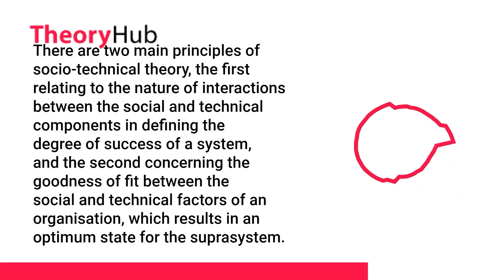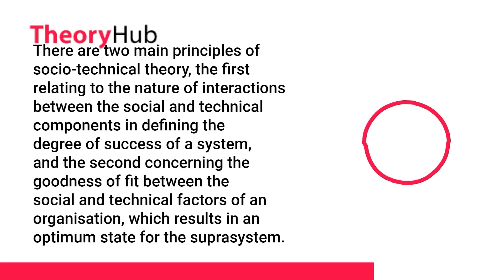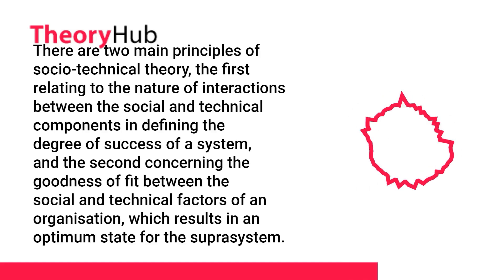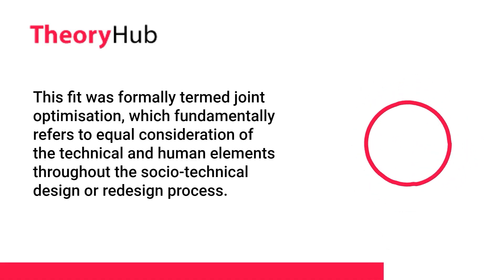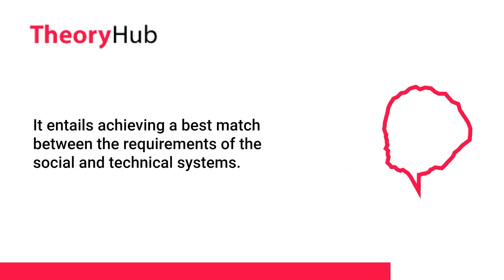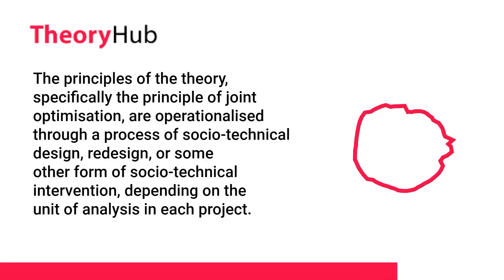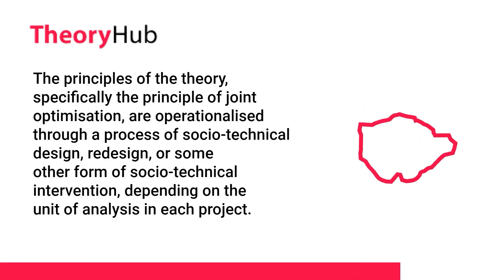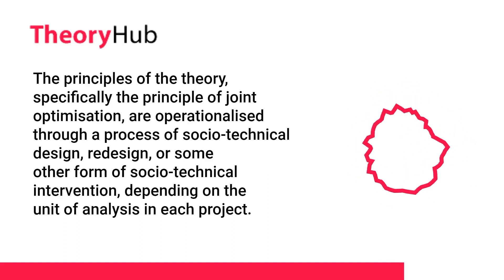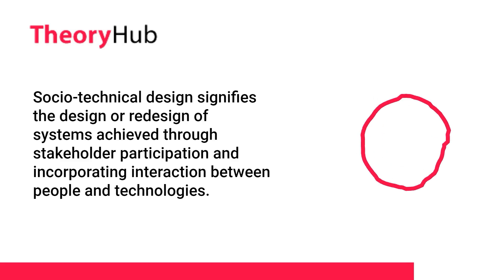There are two main principles of socio-technical theory: the first relating to the nature of interactions between the social and technical components in defining the degree of success of a system, and the second concerning the goodness of fit between the social and technical factors of an organization, which results in an optimum state for the suprasystem. This fit was formally termed joint optimization, which fundamentally refers to equal consideration of the technical and human elements throughout the socio-technical design or redesign process, entailing a best match between the requirements of the social and technical systems. The principle of joint optimization is operationalized through a process of socio-technical design, redesign, or some other form of socio-technical intervention, with socio-technical design signifying the design or redesign of systems achieved through stakeholder participation and incorporating interaction between people and technologies.